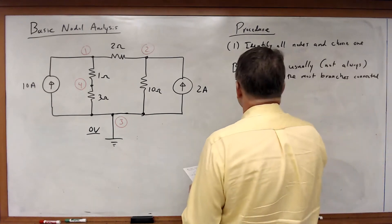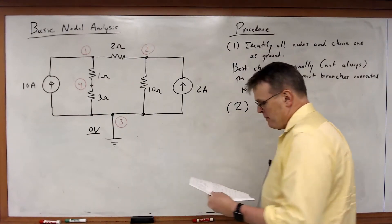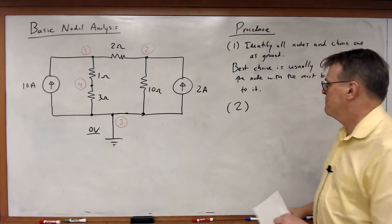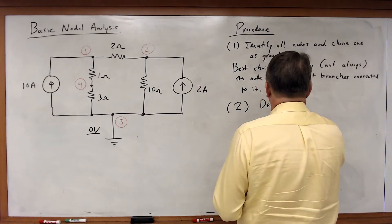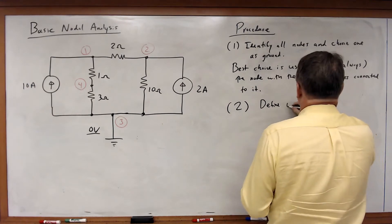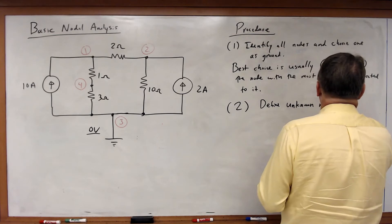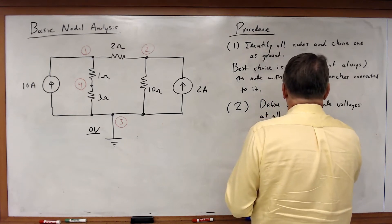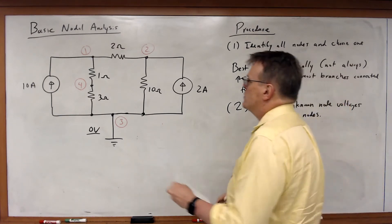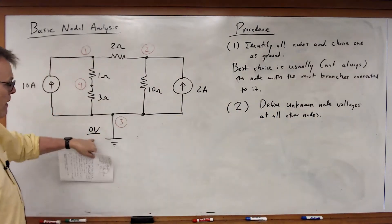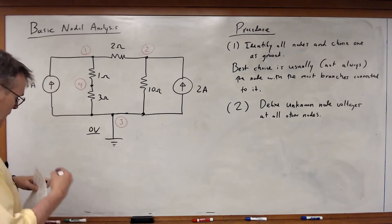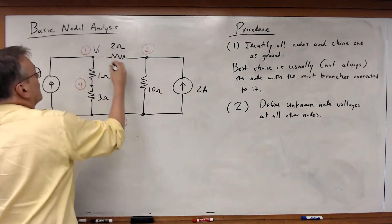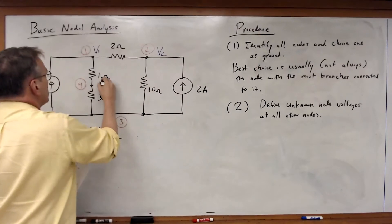First step. Second step, I'm going to define unknown node voltage variables at the other nodes. So for my other three nodes, this one's defined, I don't need a variable for it. But for the other three, they're not defined. And what I'm going to do is I'm going to call those V1, V2, and V4.